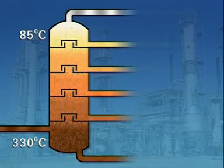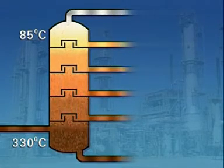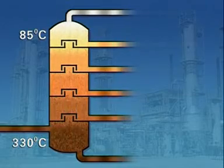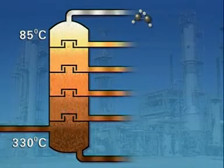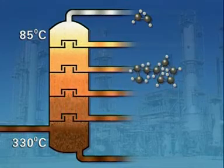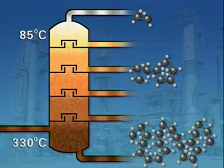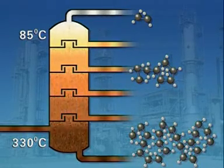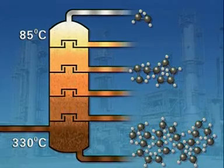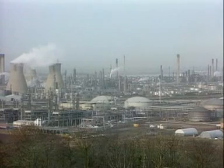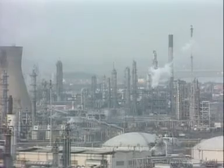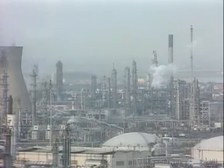Different hydrocarbons condense at different temperatures, running off at various levels. Those with lower boiling points are collected at the top. Those with higher boiling points run off nearer the bottom. The longer the molecules, the higher the boiling point. Industrial distillation separates crude oil into useful fractions, each containing molecules of a similar size.